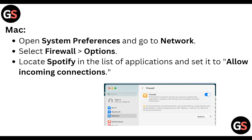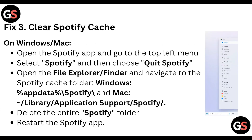On Mac, open System Preferences, go to Network, then select Firewall and Options. Locate Spotify in the list of applications and set it to allow incoming connections.